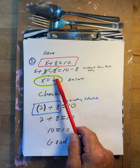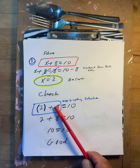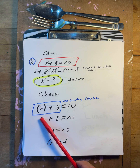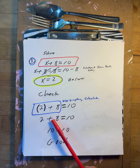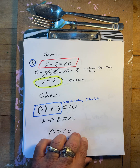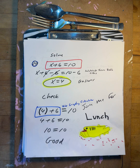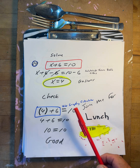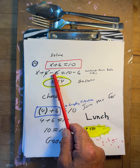x equals two. Does that work? Try it: two plus eight — two plus eight is ten. Ten equals ten. It works. You can use the graphing calculator if you want.